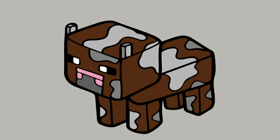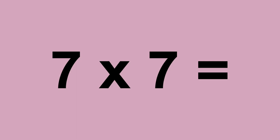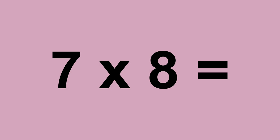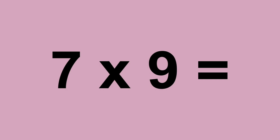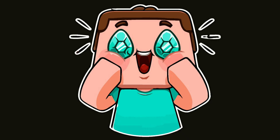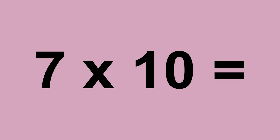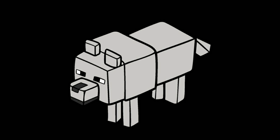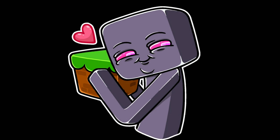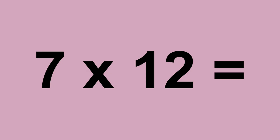7 times 6 equals 42. 7 times 7 equals 49. 7 times 8 equals 56. 7 times 9 equals 63. 7 times 10 equals 70. 7 times 11 equals 77. 7 times 12 equals 84.